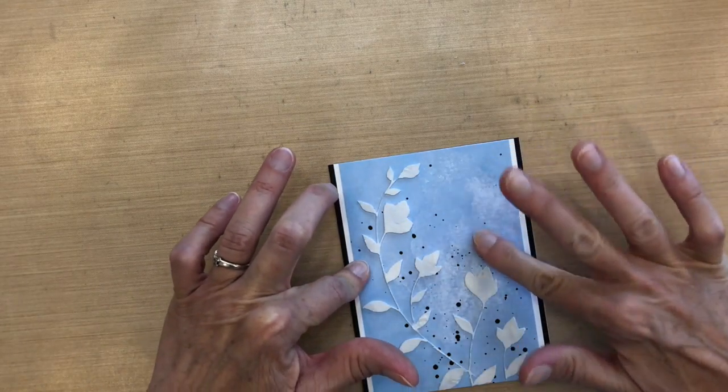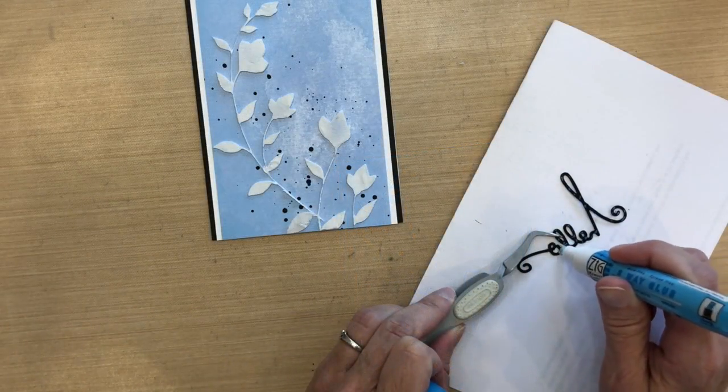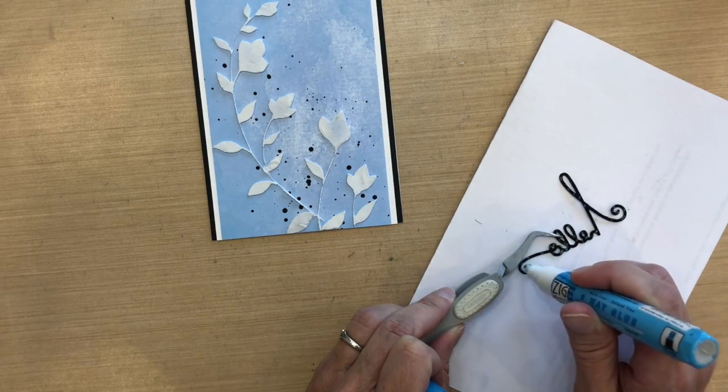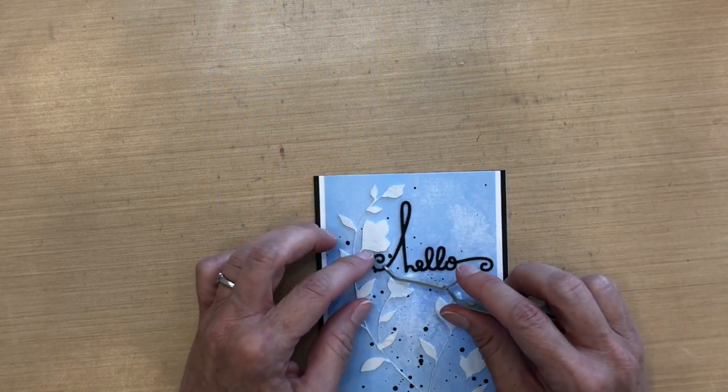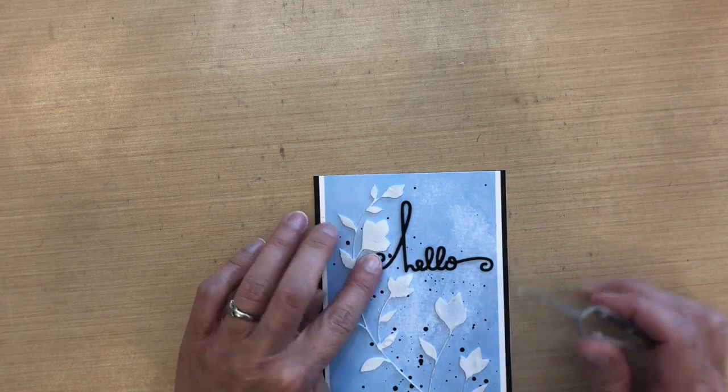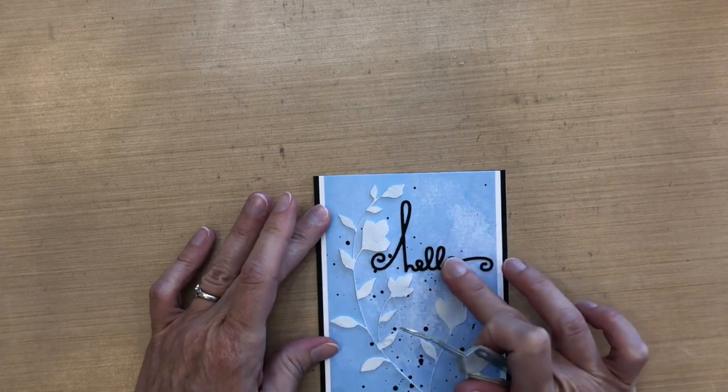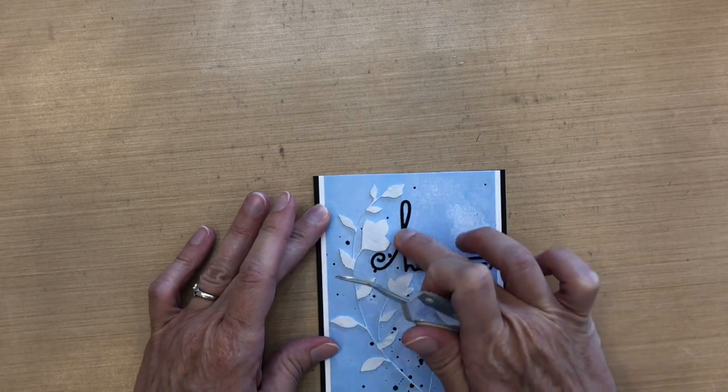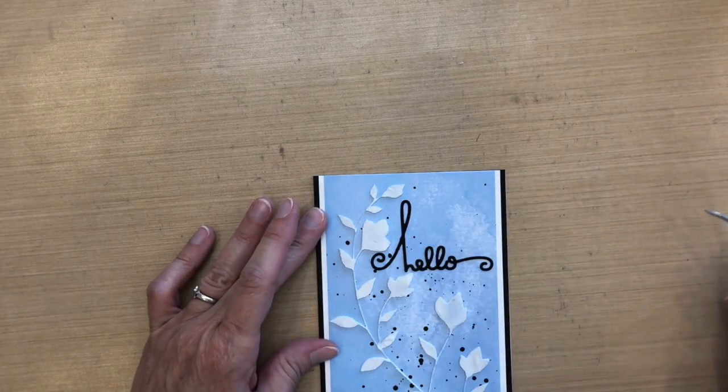Now I'm using the Paper Smooches Hello Words die set. I'm just going to put some two-way glue on the back. This is the perfect sentiment because it fits right inside in between those flowers. I'm just going to press it down on there and that is the card for today.